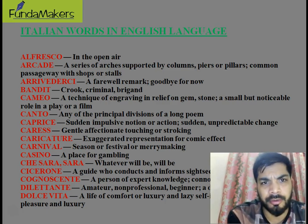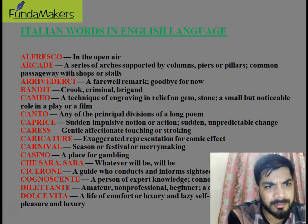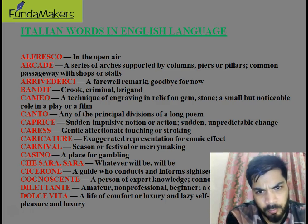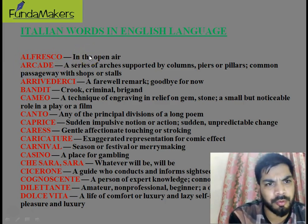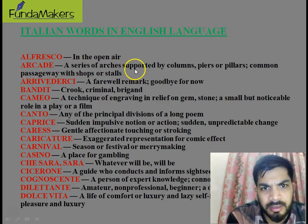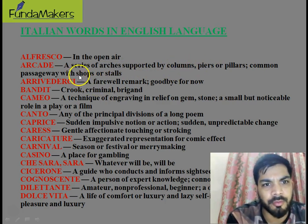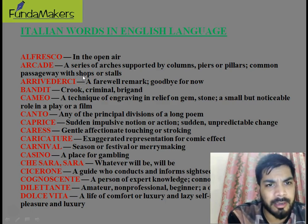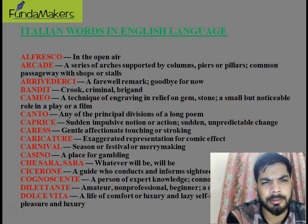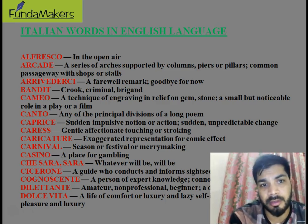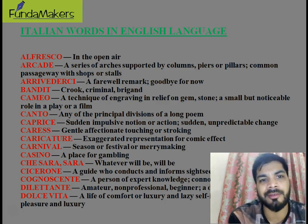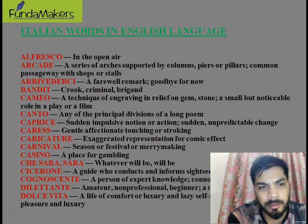In this particular video, I'll be talking about Italian words being used in English language, and in the next session I shall be talking about Latin words. Words written in red are the Italian words and in black are their meanings. First, 'al fresco' means in the open air — an al fresco dinner means dinner is in the open air. Second, 'arcade' is a series of arches supported by columns or pillars, a common passageway with shops or stalls. You must have seen this in places like Connaught Place in Delhi or Hazratganj in Lucknow — that style is known as arcade.